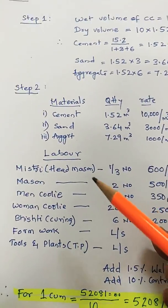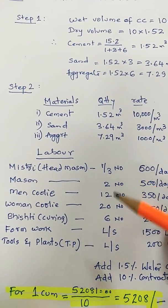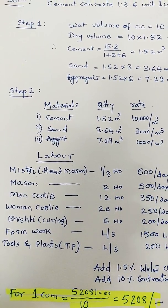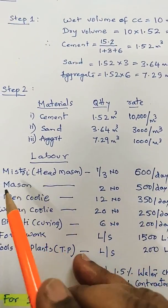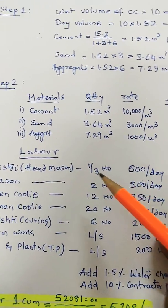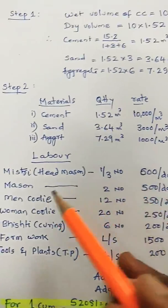Then labor. Since it is a foundation, laborers are less than for slab and beam columns. It is at ground level, so laborers considered are less.